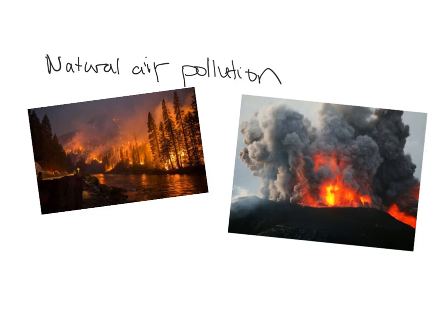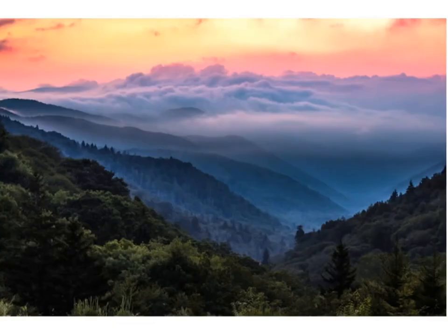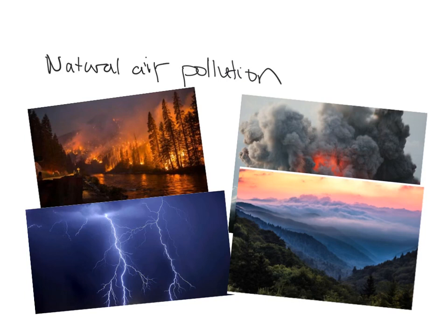Maybe a little surprising is that natural air pollution can come from lightning strikes — lightning can actually create nitrogen oxides from atmospheric nitrogen. And even more surprisingly, natural air pollution can come from plants themselves. These are the Smoky Mountains, called the Smoky Mountains because of the production of smog resulting from VOCs — volatile organic compounds. Conifer trees produce that nice Christmas tree pine smell from VOCs like ethylene and terpenes, which can react with stuff in the atmosphere and create smog.